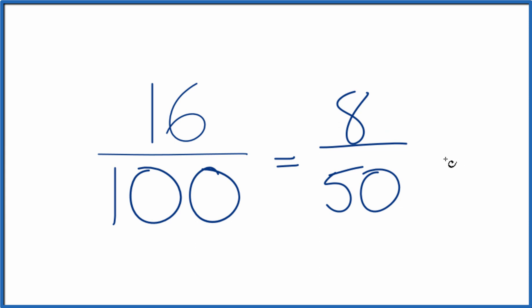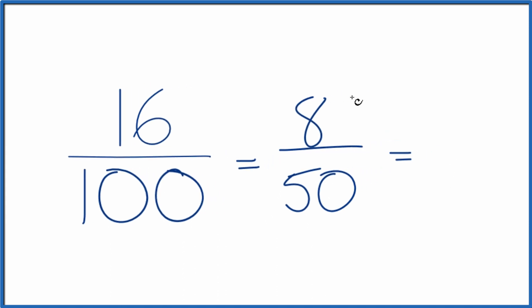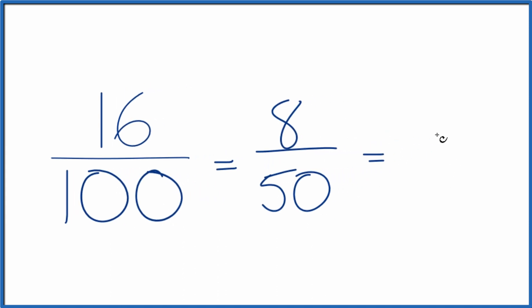But these are even numbers as well. So we could divide both of these by 2. 8 divided by 2 is 4. And 50 divided by 2 is 25. So you end up with 4 twenty-fifths.